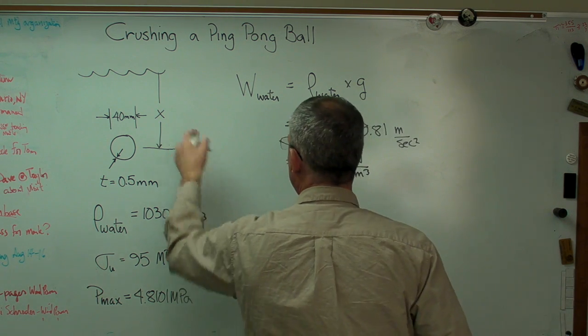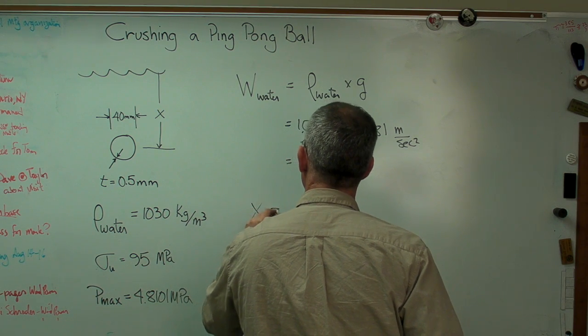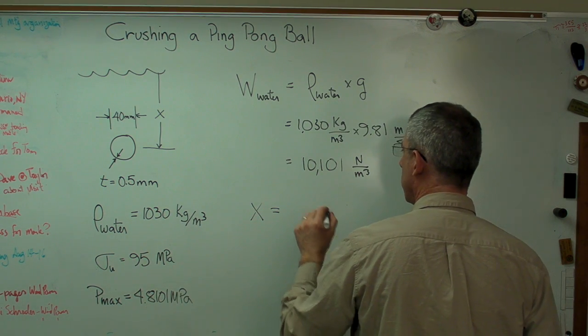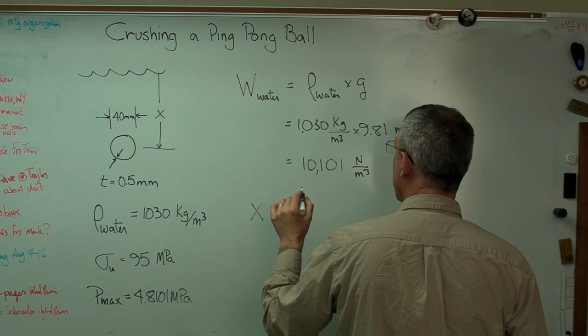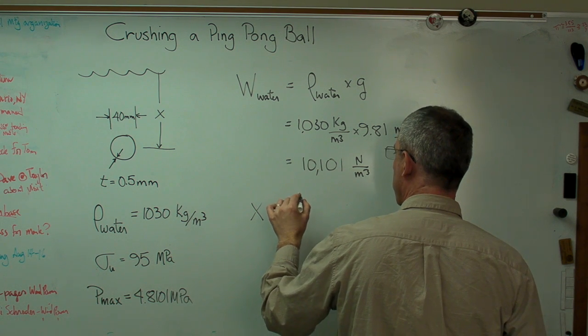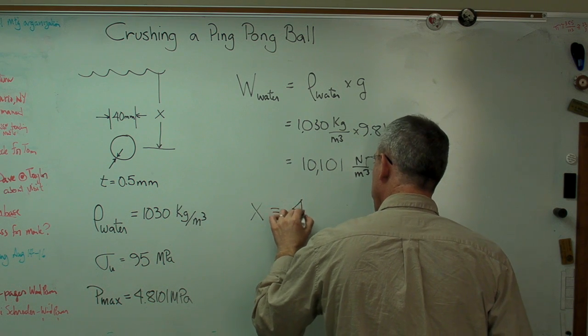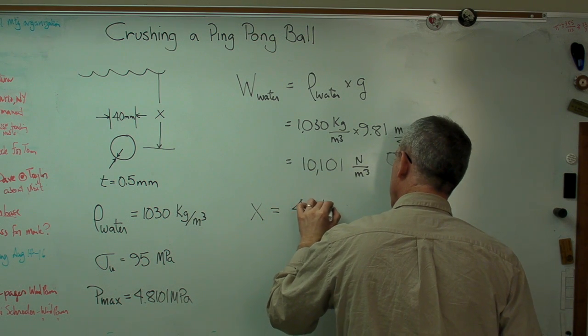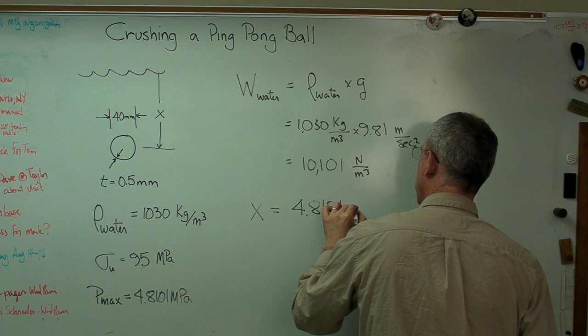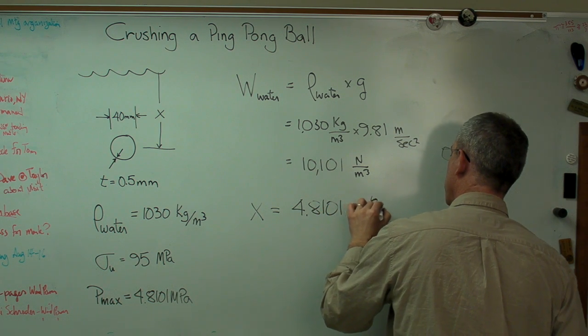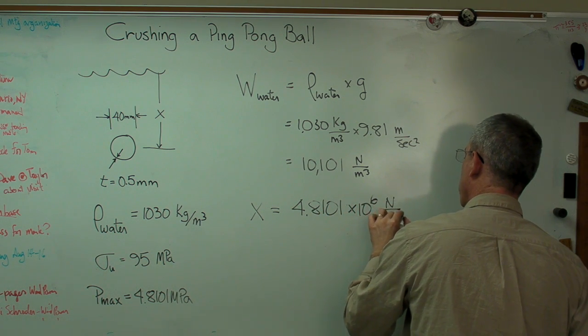So x, our distance, is going to be, let's see if I do this right, it's going to be the pressure required, which is 4.8101 megapascals, 4.8101 times 10 to the sixth newtons per meter squared.